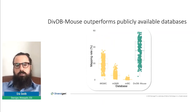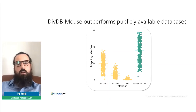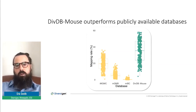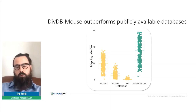We at Diversagen are certainly not the first people to develop a mouse-specific database — there are others publicly available, and I've highlighted three of them here. But importantly, our mapping rates with DivDB Mouse are significantly higher than all of the other publicly available mouse databases for shotgun sequencing.